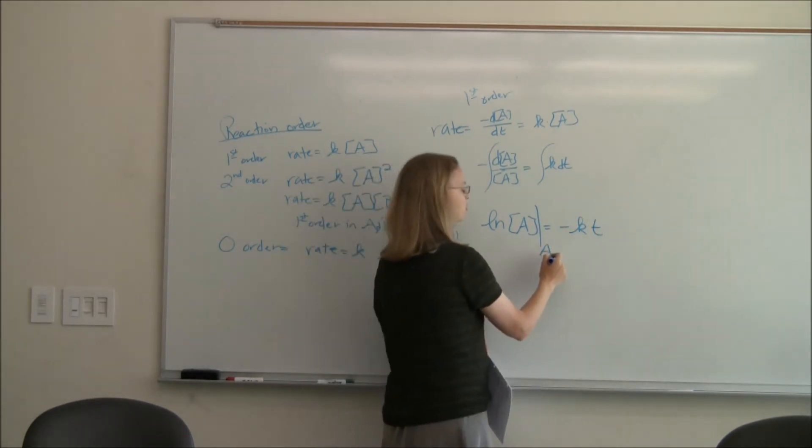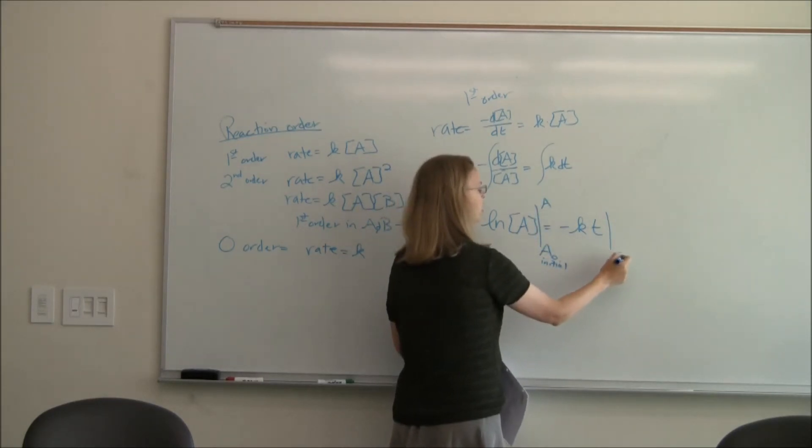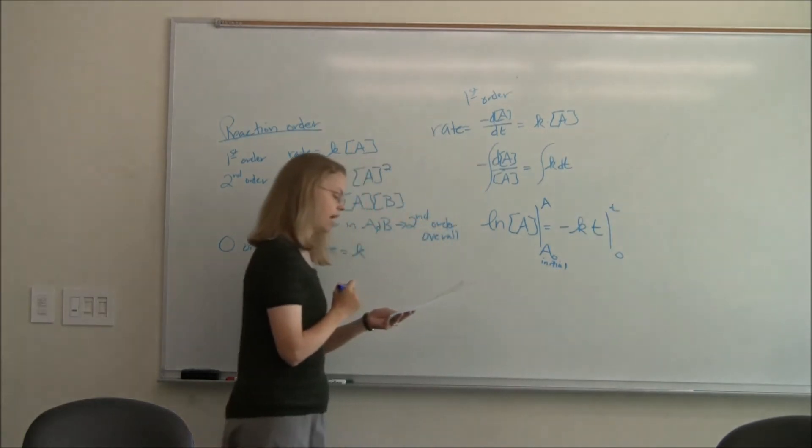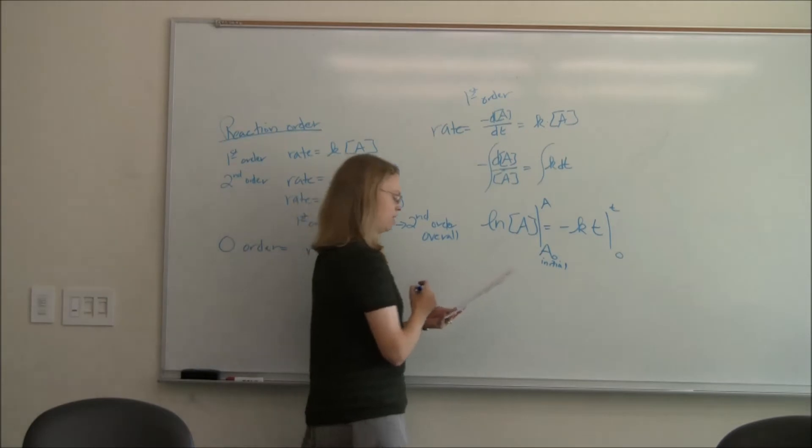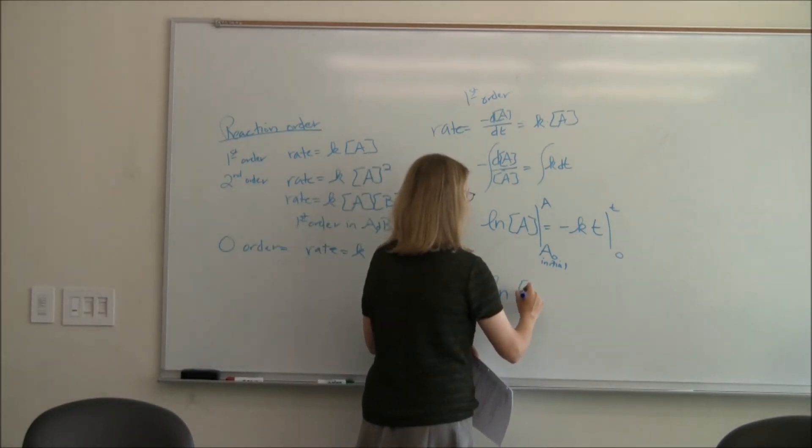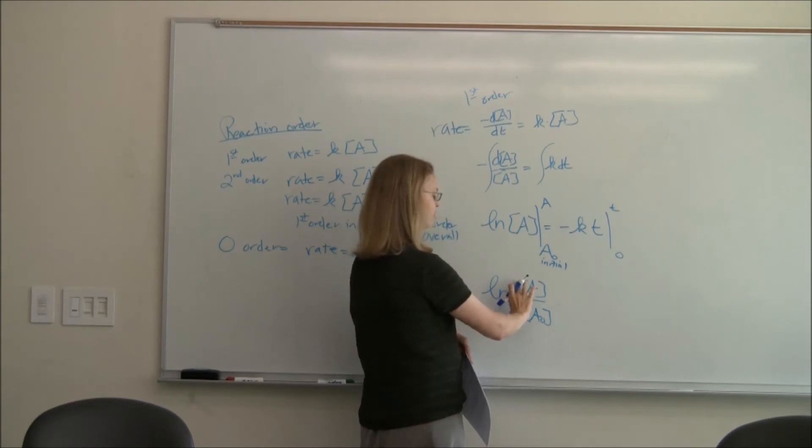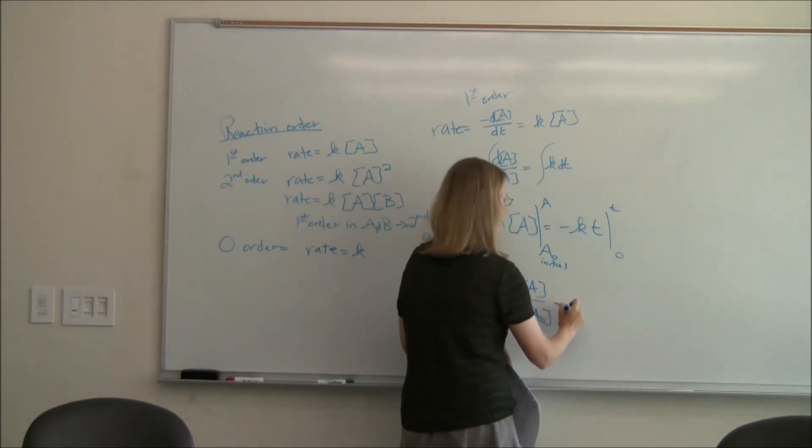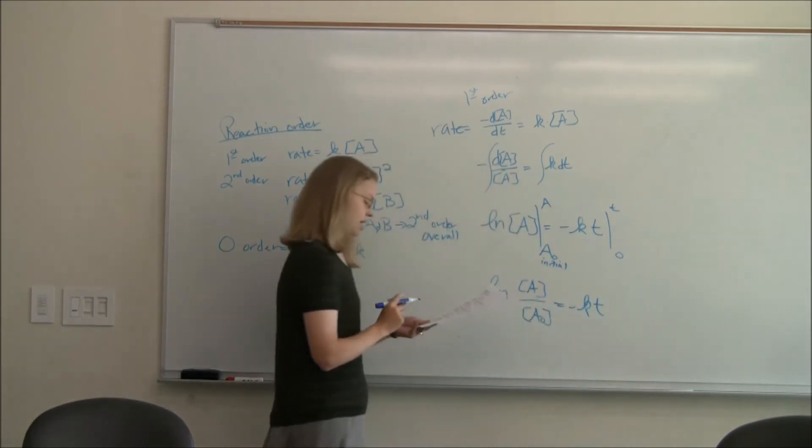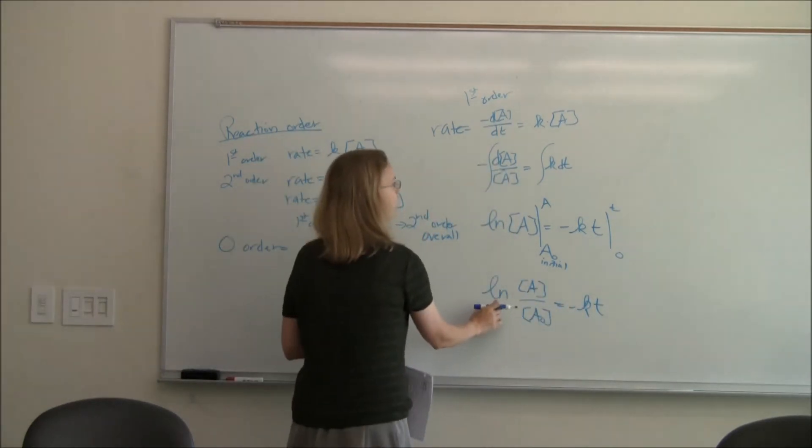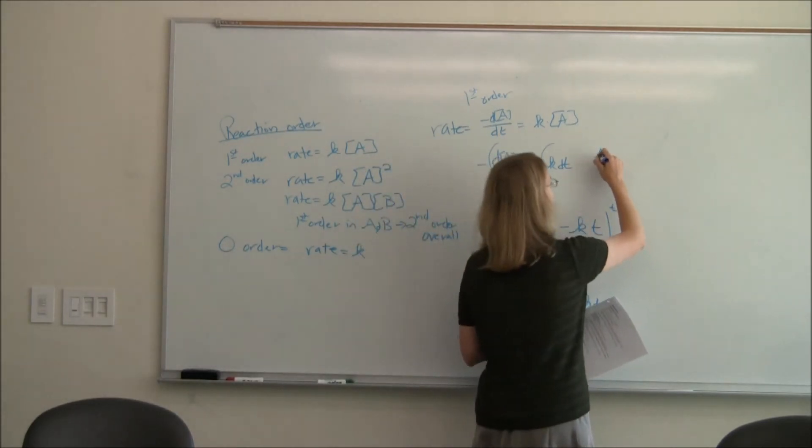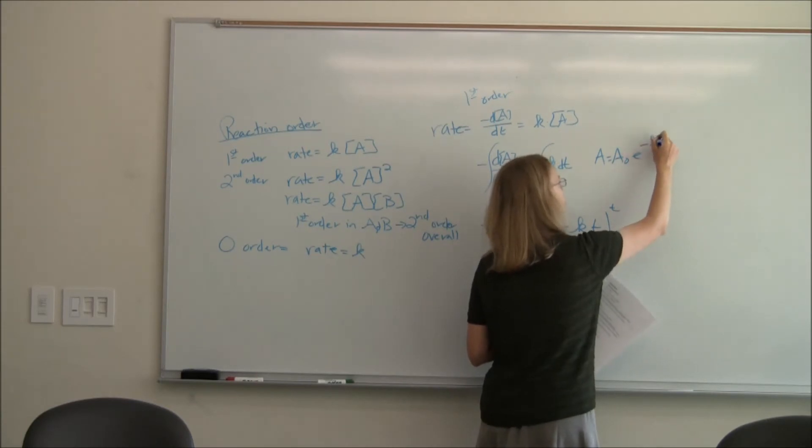The integral of something one over something ends up being the natural log. And so I end up with this. That the natural log of A is equal to minus kt. Now, when am I going to evaluate those between? I'm going to be evaluating it between some starting initial value of A, and whatever the current value of A is. Time will start at zero and we'll go to t. And so if we do that, we'll end up with this expression. The natural log of A over A zero.